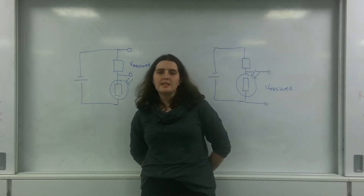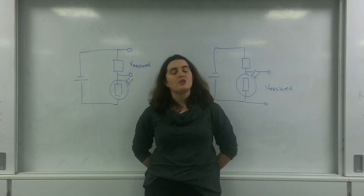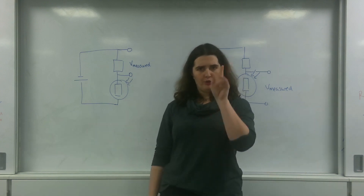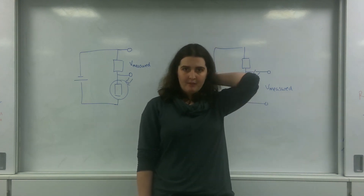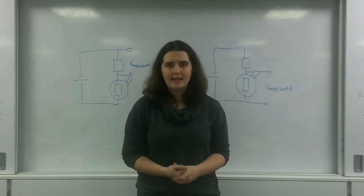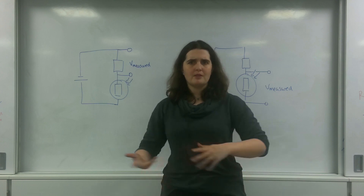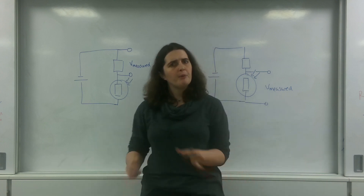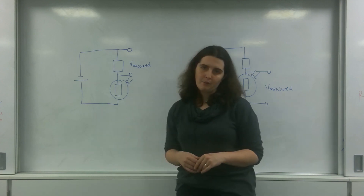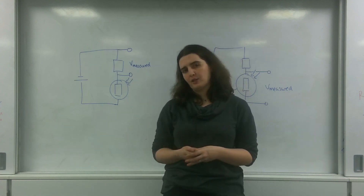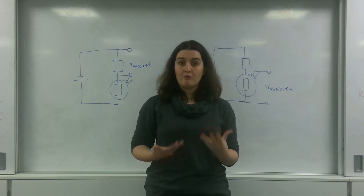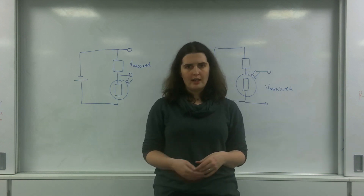Good evening and welcome to TL Physics. Today I'm going to talk about potential dividers. A potential divider is a circuit with two or more resistors in it, and what it's doing is splitting up the potential. If you just have one resistor, that resistor gets all the potential, but a potential divider has two or more resistors that actually split up the potential.